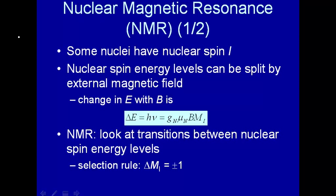Here we're going to talk about nuclear magnetic resonance, abbreviated NMR. We've talked about transitions between electronic spin states where we have a spin one-half. We put that spin one-half into a magnetic field and the energy levels split. It turns out that nuclei also have a nuclear spin, and if you put the nuclei in a magnetic field, these nuclear energy levels, which are normally degenerate, will split. Some nuclei have a nuclear spin, and instead of using the symbol S, which we used for electron spin, we're going to use the symbol I. But other than that, it's about the same.